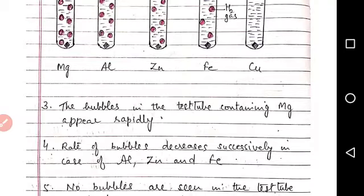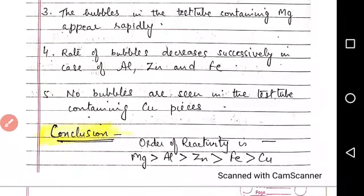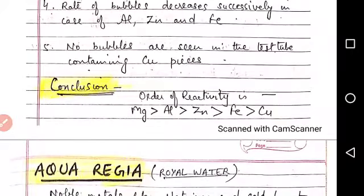So here is the point. The bubbles in the test tube containing magnesium appear rapidly. Next, rate of bubbles decreases successively in case of aluminium, zinc and iron. No bubbles are seen in the test tube containing copper pieces.